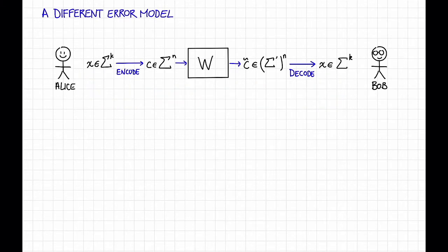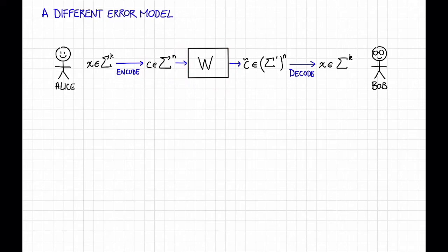Here's the error model that we will consider. As before, we have a sender, Alice, with a message x of length k. She encodes it into a codeword c of length n. Then this goes through a channel w, which I'll describe in a moment, to get a corrupted codeword c-twiddle of length n in some different alphabet sigma prime.